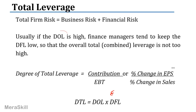The firm's risk may consist of business risk and financial risk. We can say the degree of operating leverage represents the business risk, and the degree of financial leverage represents the financial risk. Together, you get the degree of total leverage.